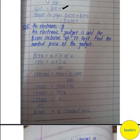Question number 5: an electronic gadget is sold for $13.91 inclusive of 7% GST. Inclusive means the price includes GST. We need to find the mark price of the gadget. The total price paid is $13.91 which already includes 7% GST.